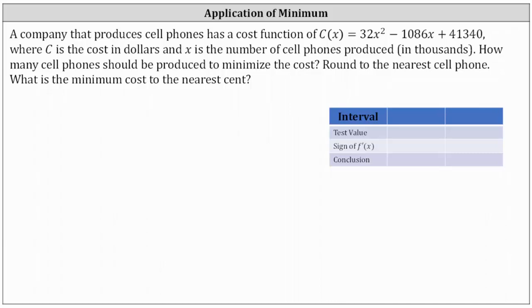A company that produces cell phones has a cost function c of x, where c is the cost in dollars and x is the number of cell phones produced in thousands. How many cell phones should be produced to minimize the cost, rounded to the nearest cell phone, and what is the minimum cost to the nearest cent?